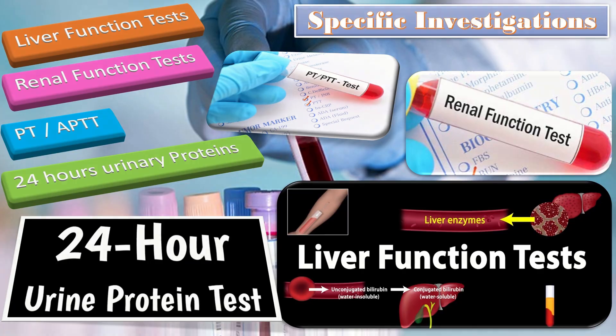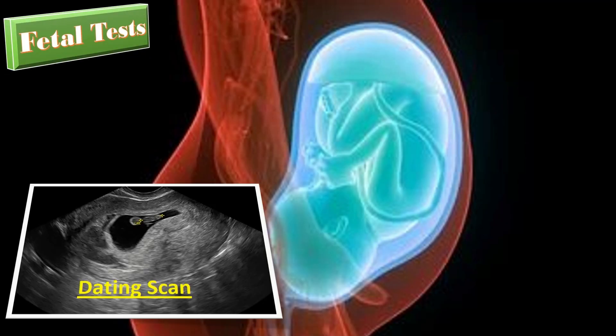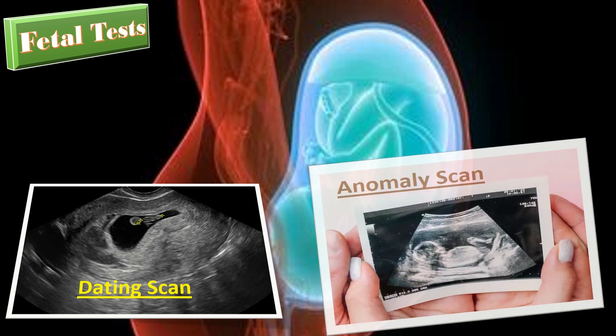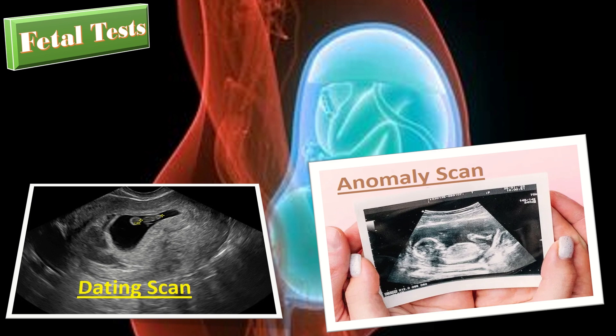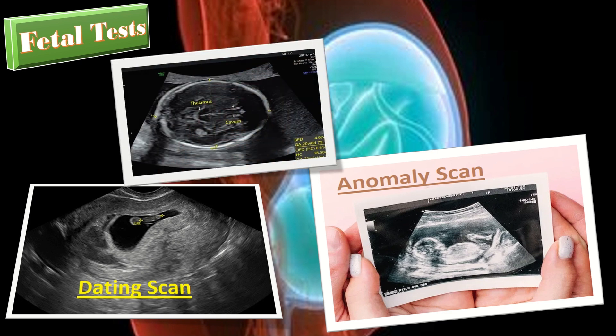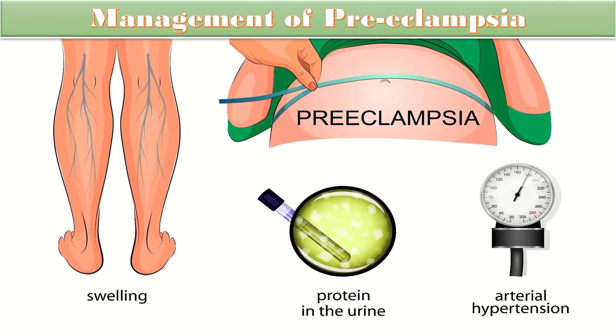Fetal tests include a dating scan showing CRL, number of fetuses, any adnexal pathology, and estimated date of delivery. An anomaly scan is performed showing any congenital anomaly. A recent scan shows biometry, amniotic fluid index, estimated fetal weight, placental localization, and fetal presentation. Management of preeclampsia depends on the overall clinical presentation, examination, and investigation findings.